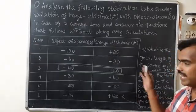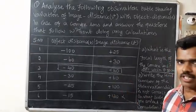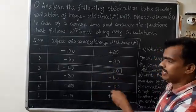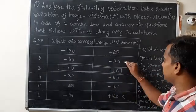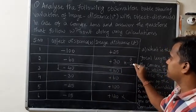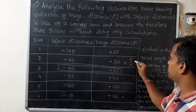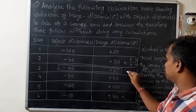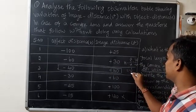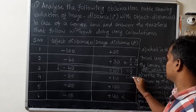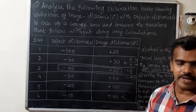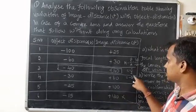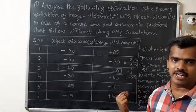The third question is, find the magnification of the second observation. For the second observation, we need to find out the magnification. What is the magnification formula? m is equal to v by u. What is the v value? 30. What is the u value? Minus 60. Therefore, the magnification is minus 1 by 2, that is minus 0.5. Minus 0.5 means the image gets reduced, which is real and inverted image.